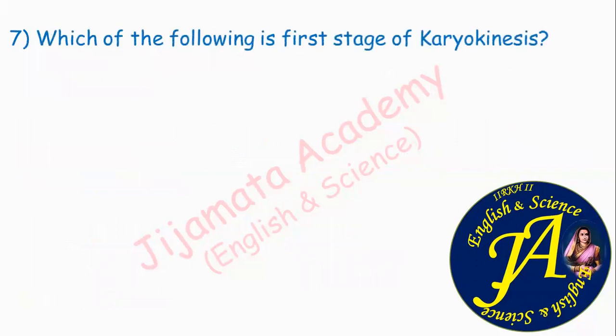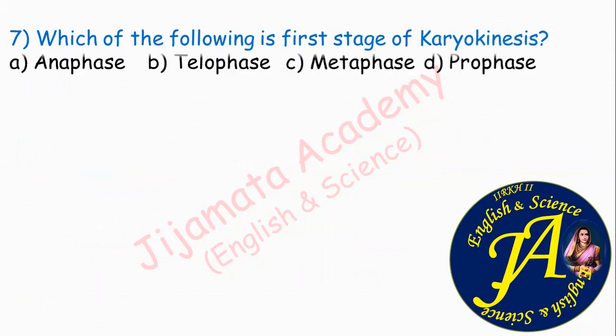Next question: which of the following is the first stage of karyokinesis? Karyokinesis means nuclear division, which occurs in four steps. Options are anaphase, telophase, metaphase, prophase. Correct answer is option D: prophase. The four steps of karyokinesis are prophase, metaphase, anaphase, and telophase. Therefore, the first stage is prophase.